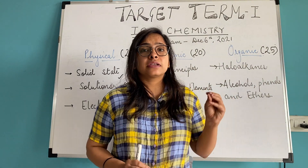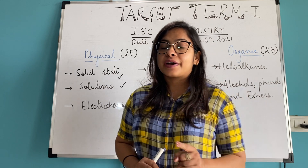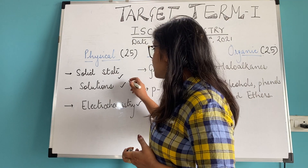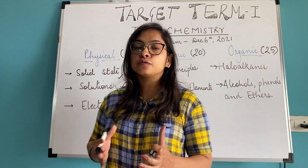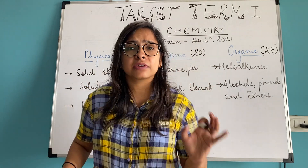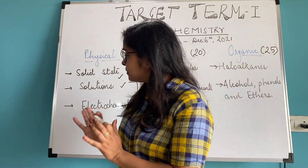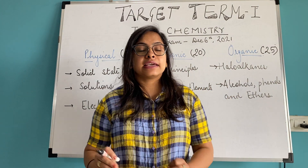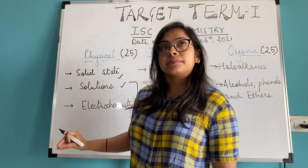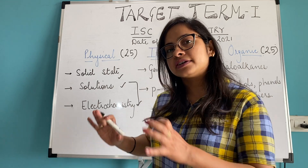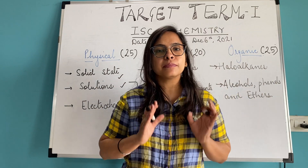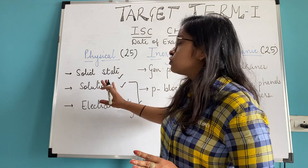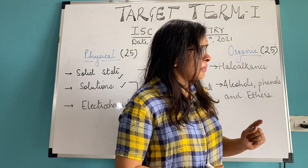Coming to Electrochemistry - the Nernst equation and related numericals come in the exam, and then Faraday's Laws are very important. My personal feeling is that these two lessons - Solutions and Electrochemistry - will take your maximum time. Out of 14 days, Solid State you can complete in 3-4 days, but these two lessons will require a minimum of 4 to 5 days of revision each. Give them a lot of attention. These are chapters you should do first so you remain confident that your numericals are sorted - but do not leave any numericals or subtopics that are in your exam syllabus.